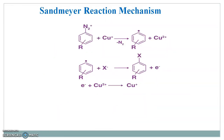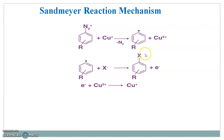The Sandmeyer reaction mechanism commences with a transfer of a single electron from copper to the diazonium. This results in the formation of a non-partitioning diazo radical as well as copper halide. A molecule of nitrogen gas is then released by the diazo radical to give an aryl radical. This aryl radical then reacts with copper halide to restore the catalyst copper and produce the final aryl halide product.